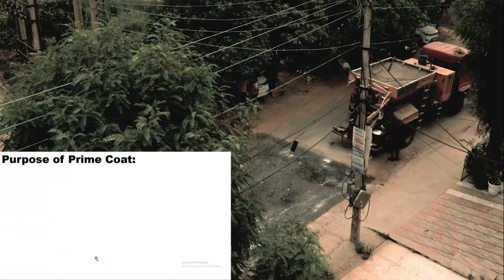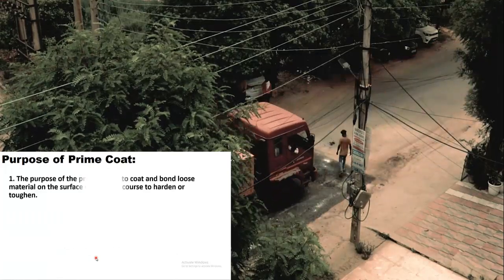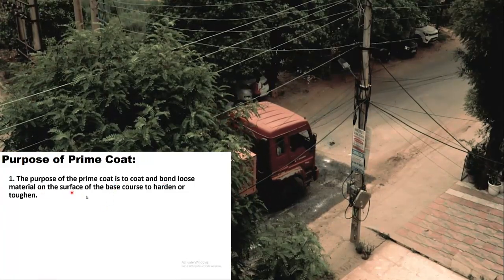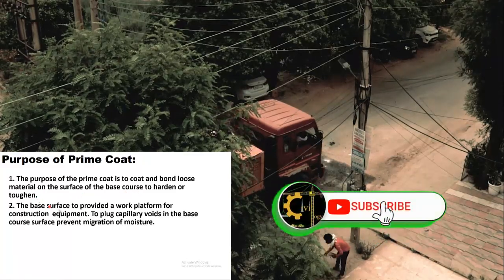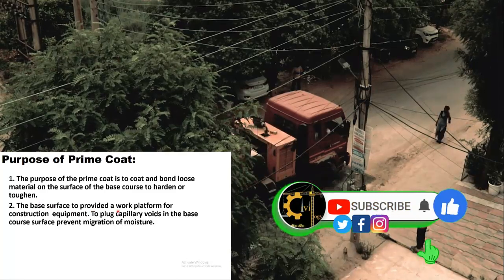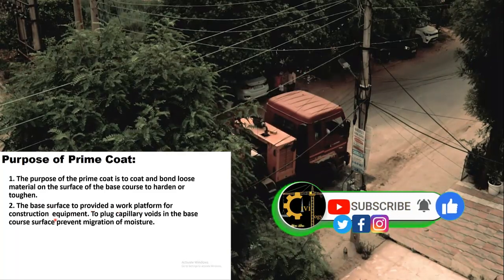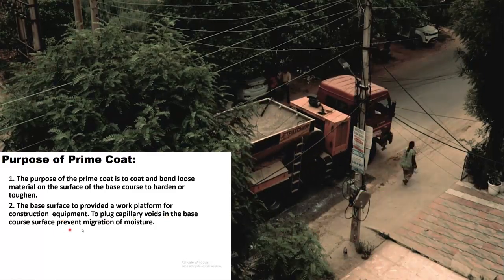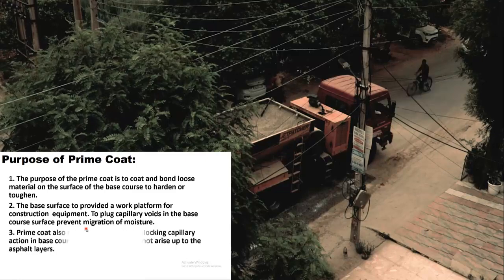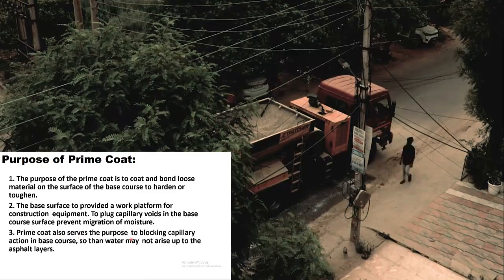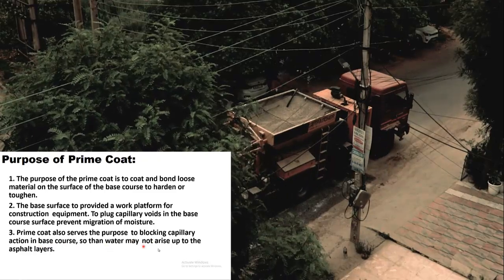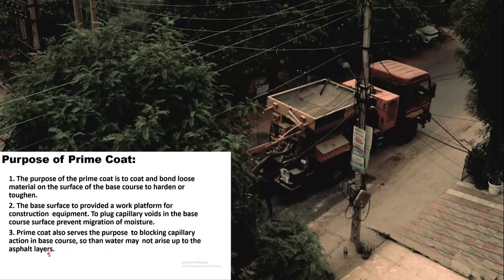What is the purpose of prime coat? The purpose of prime coat is to coat and bond loose material on the surface of the base course, to harden or toughen the base surface, to provide a work platform for construction equipment, to plug capillary voids in the base course surface, and to prevent migration of moisture. Prime coat also serves the purpose to block capillary action in base courses so that water may not rise up to the asphalt layers.